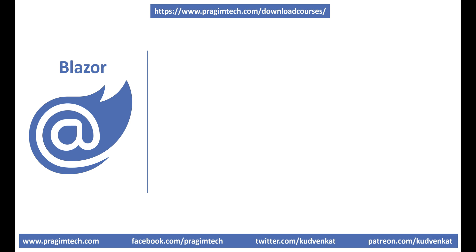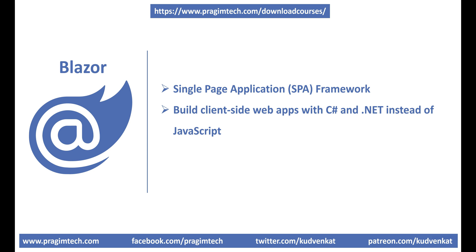So, what is Blazor? Well, just like many of the client-side development frameworks like Angular and React, Blazor is also a single page application framework — that is, an SPA framework in short. We use Blazor for building interactive client-side web apps with C Sharp and .NET instead of JavaScript. This means we can now leverage the existing ecosystem of .NET libraries even for client-side web development.